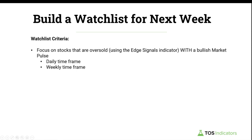The first condition is that stocks need to be oversold — either via our daily or weekly timeframe chart, really a longer timeframe chart. Oversold means using our Edge Signals indicator, which is a free indicator for all Volatility Box members. If you don't have access to this, you can use something like Stochastics or RSI, but you may need to overlay multiple indicators to filter out all the noise and junk.